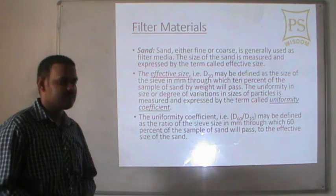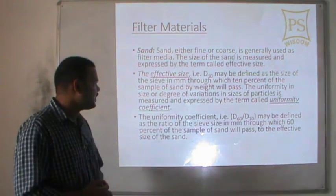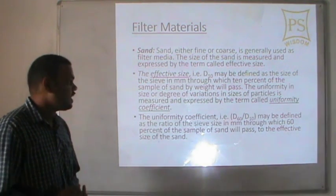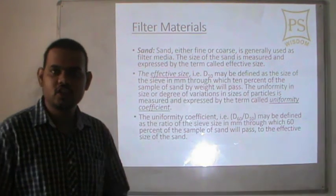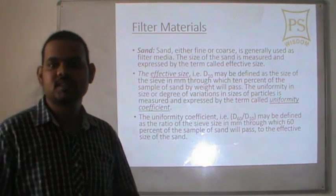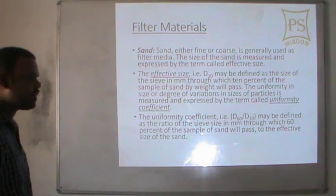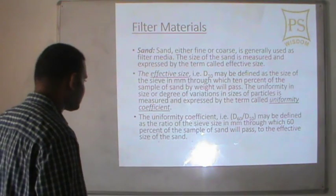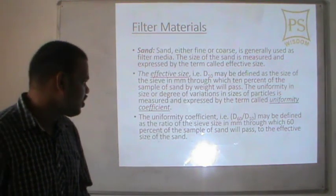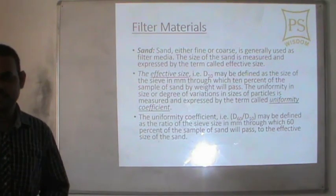The uniformity in size or degree of variation in particle size is expressed by the term uniformity coefficient, which is D60 divided by D10. The uniformity coefficient can be defined as the ratio of the sieve size in mm through which 60% of the sample sand will pass, to the effective size of the sand.